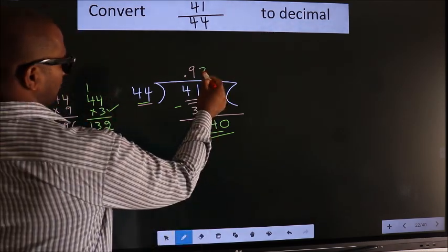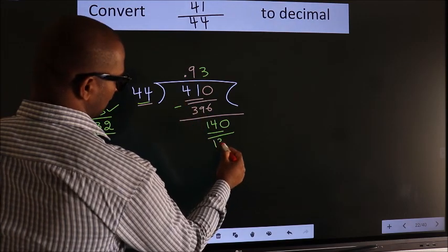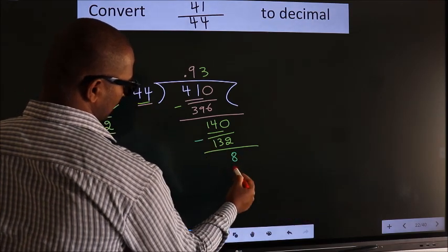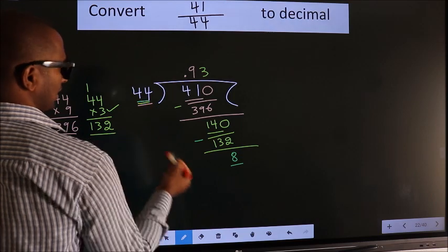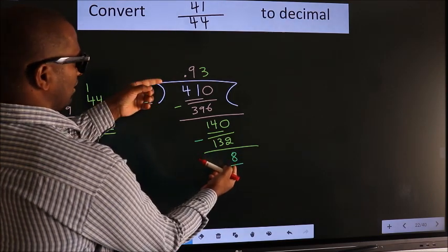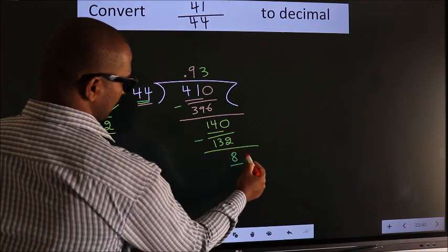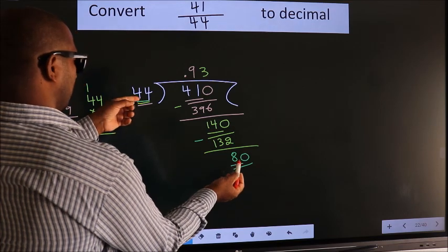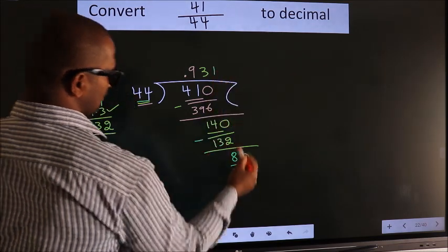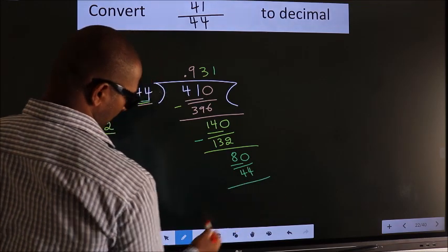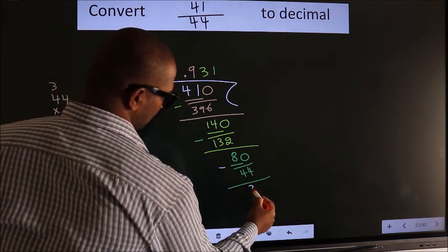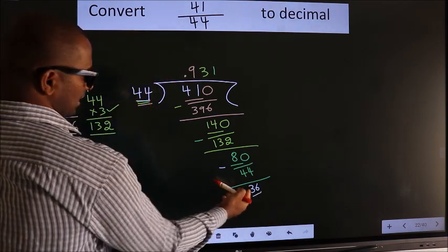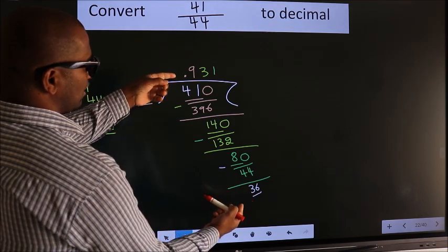44 × 3 = 132. Now we subtract and get 8. We have 8 here, and 44 here. 8 is smaller than 44. We already have the decimal, so directly take 0, making 80. A number close to 80 in the 44 table is 44 once, so 44. Now we subtract and get 36.